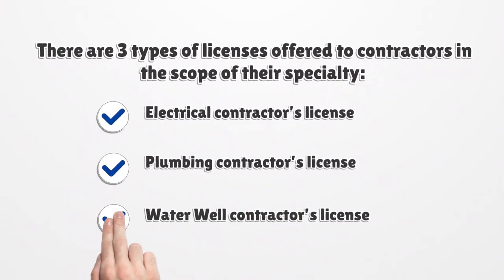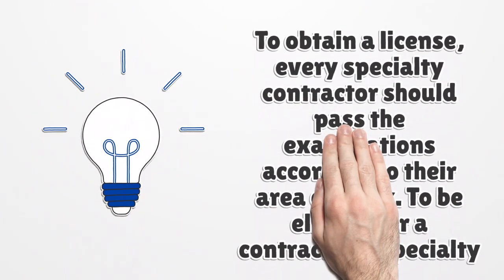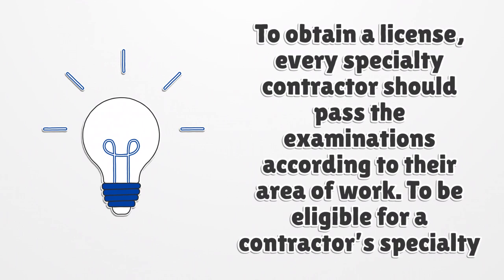There are three types of licenses offered to contractors in the scope of their specialty: electrical contractor's license, plumbing contractor's license, and water well contractor's license. To obtain a license, every specialty contractor should pass the examinations according to their area of work. To be eligible for a contractor's specialty license, you must pass with a 70% grade.